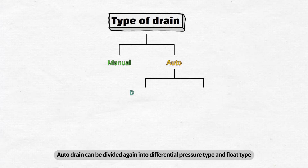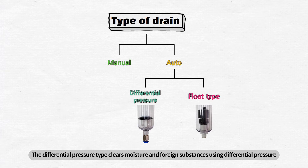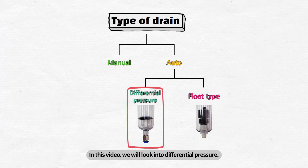Auto drain can be divided again into differential pressure type and float type depending on the structure and operating method. The differential pressure type clears moisture and foreign substances using differential pressure, while the float type uses the buoyancy of the float. In this video, we will look into the differential pressure type.